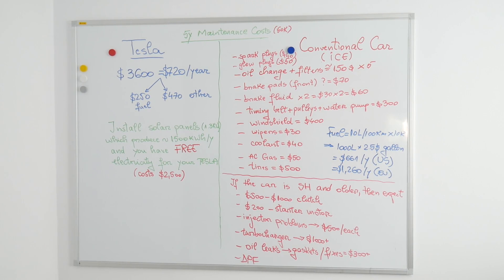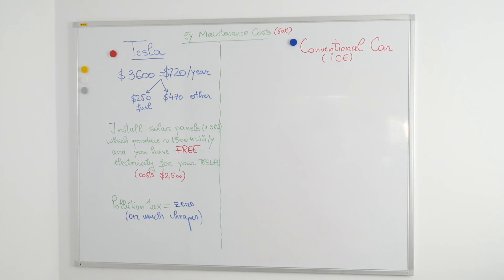Also, in most countries, the tax for pollution, emissions, or whatever you may call it, is zero. In Romania, it's zero, and in other European countries, it's zero as well.